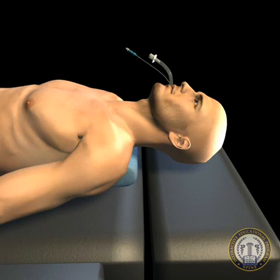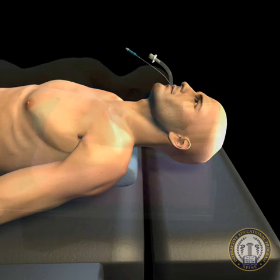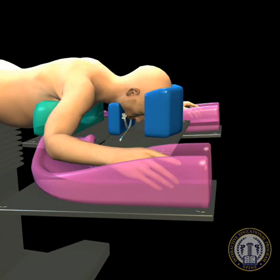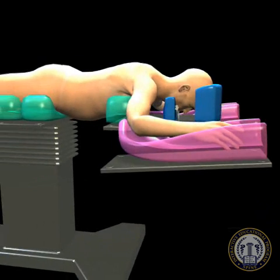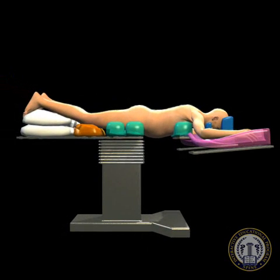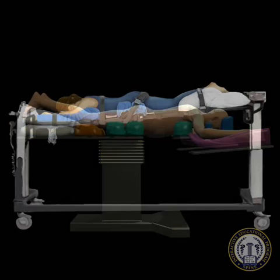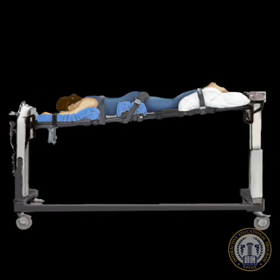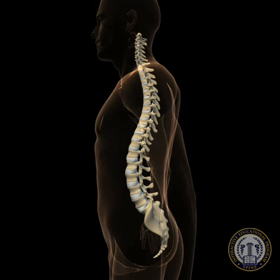Following induction of general endotracheal anesthesia, the patient is carefully turned to the prone position on a radiolucent table. The operative table options include either a standard table with chest rolls placed to maintain lumbar lordosis, or a Jackson-type table that places the hips in extension. Either option must maintain lumbar lordosis.